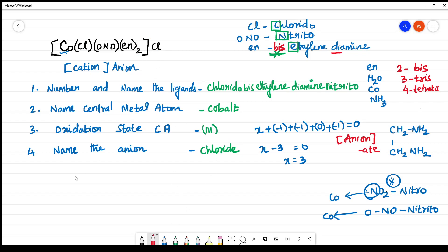Finally, what is the name of this complex? It is chloridobis ethylene diamine nitrito cobalt three chloride. This is the name of this complex. You should not leave any gap while writing the name of the complex.